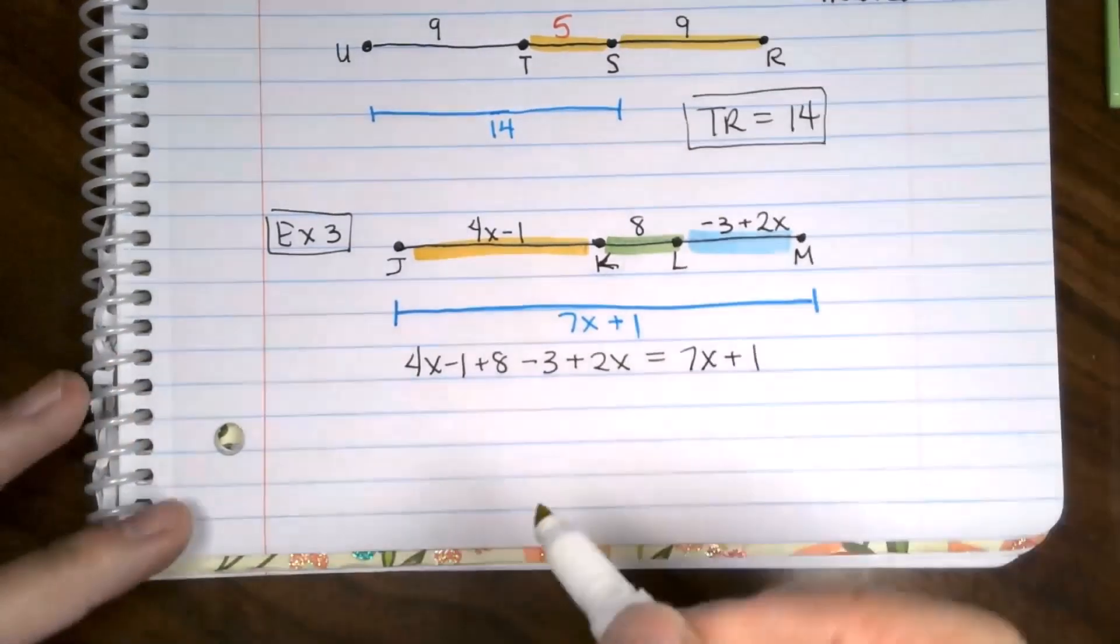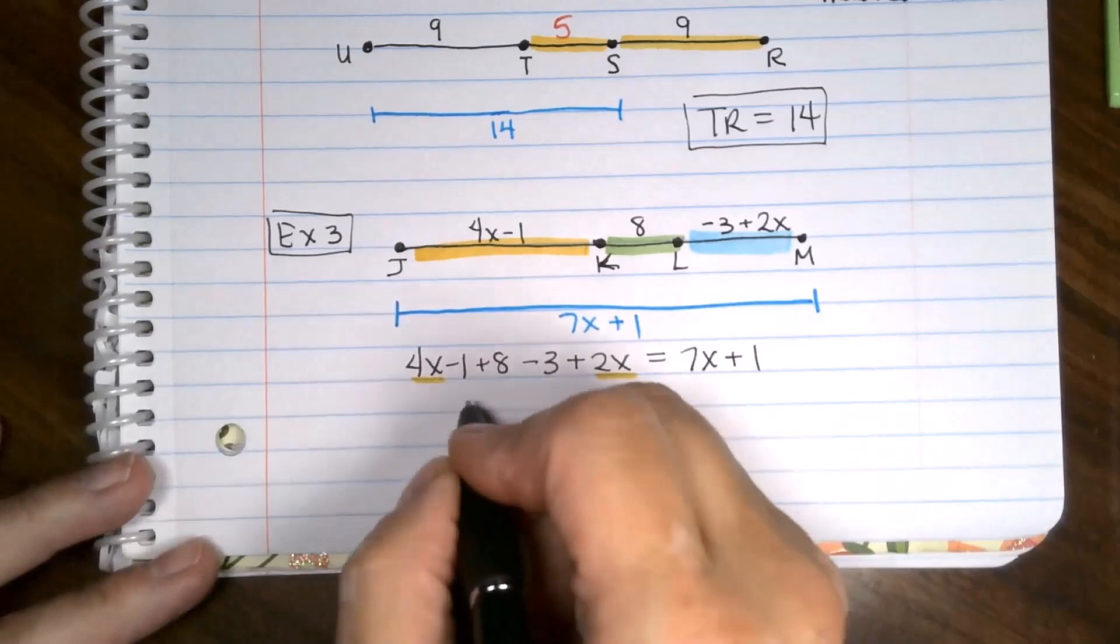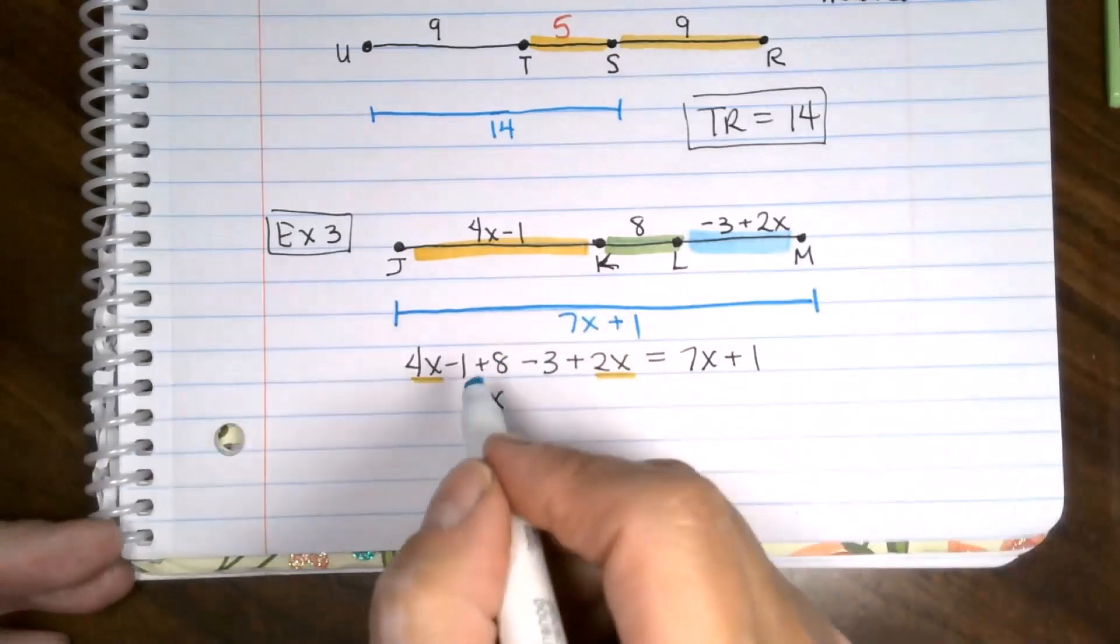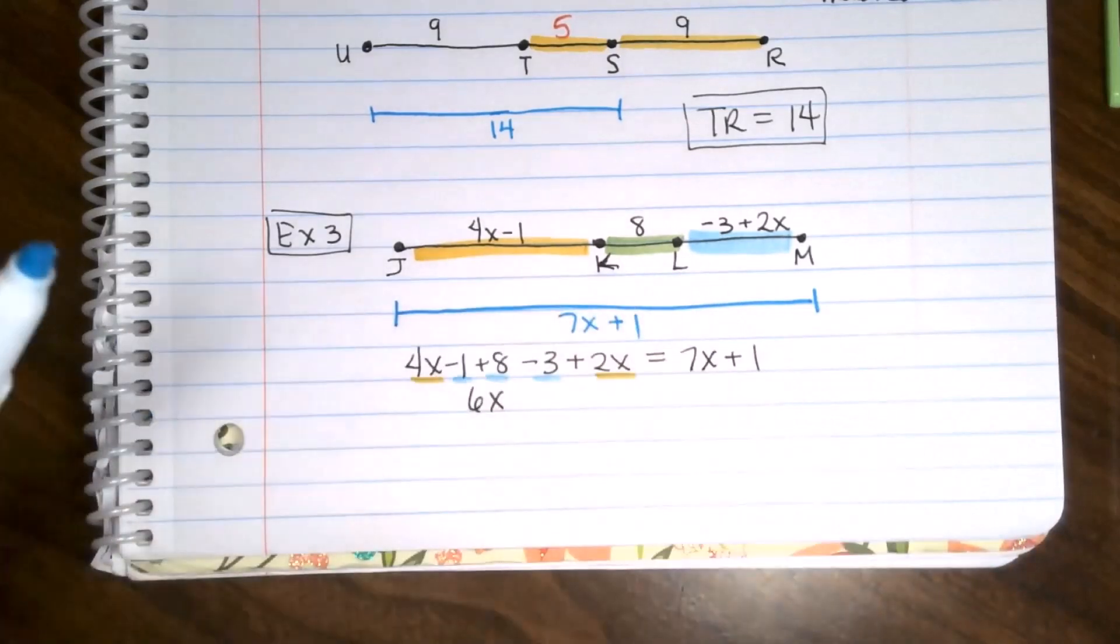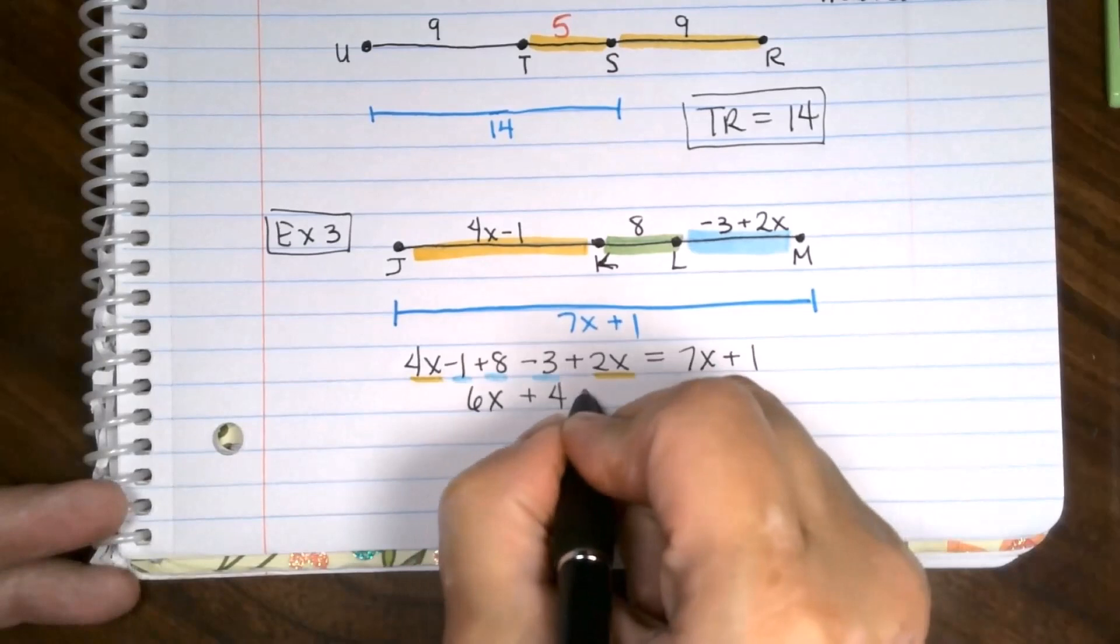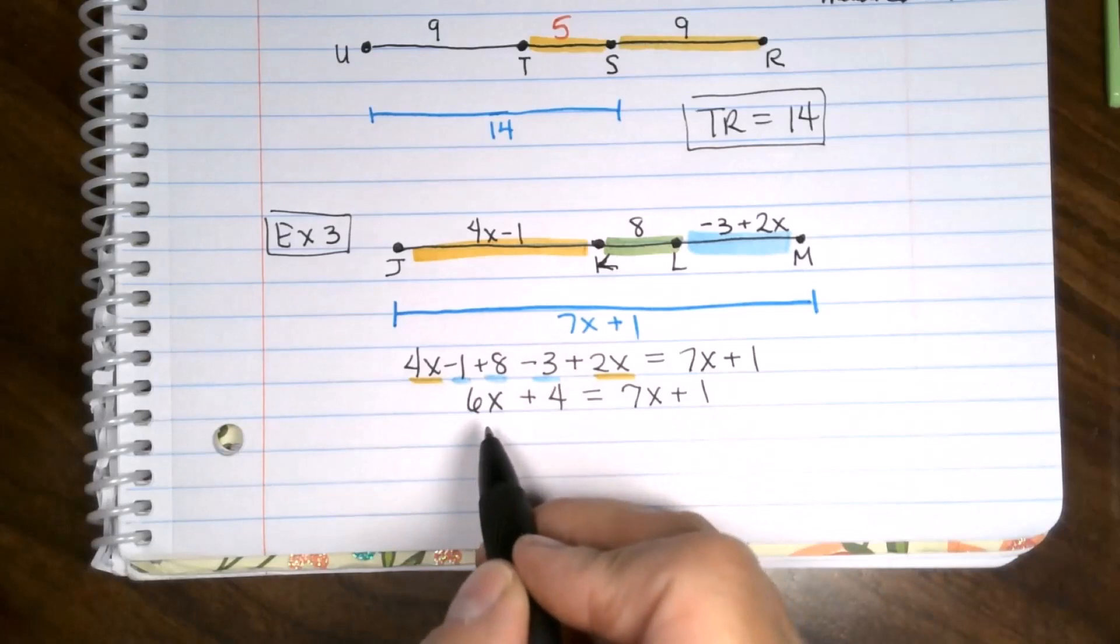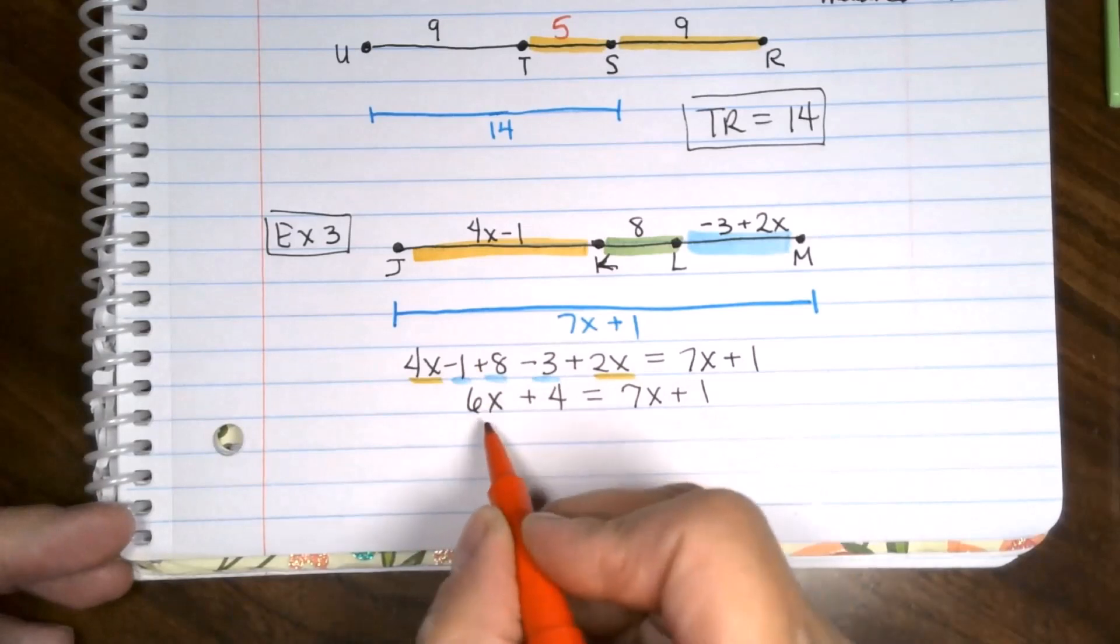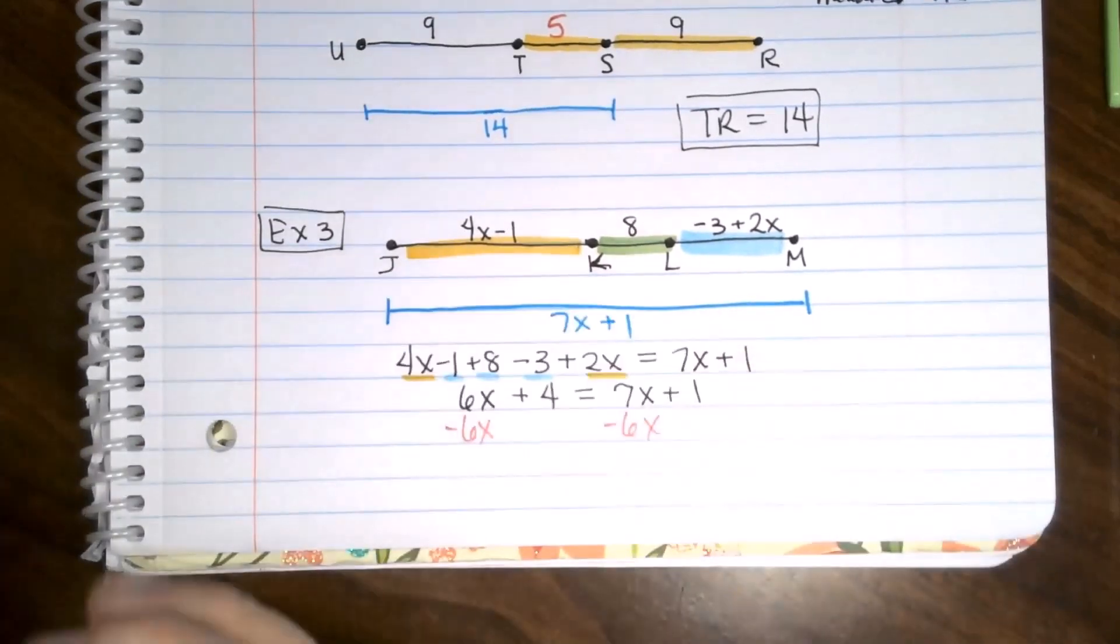When we combine like terms, we're going to put all the X's together. A four X and a two X is a six X. And then we're going to put our numbers together. We have a negative one plus eight. That's a seven. And then we have the seven minus three. So that's a plus four. Equals seven X plus one. Now we have variable on both sides. There's more than one way to solve these. But my rule of thumb is to usually subtract off the smallest variable term. So six X is fewer X's than the seven X. So I'm going to take that away from both sides first. Oh, I'm going to run out of paper. I'll be up to get all squishy here.